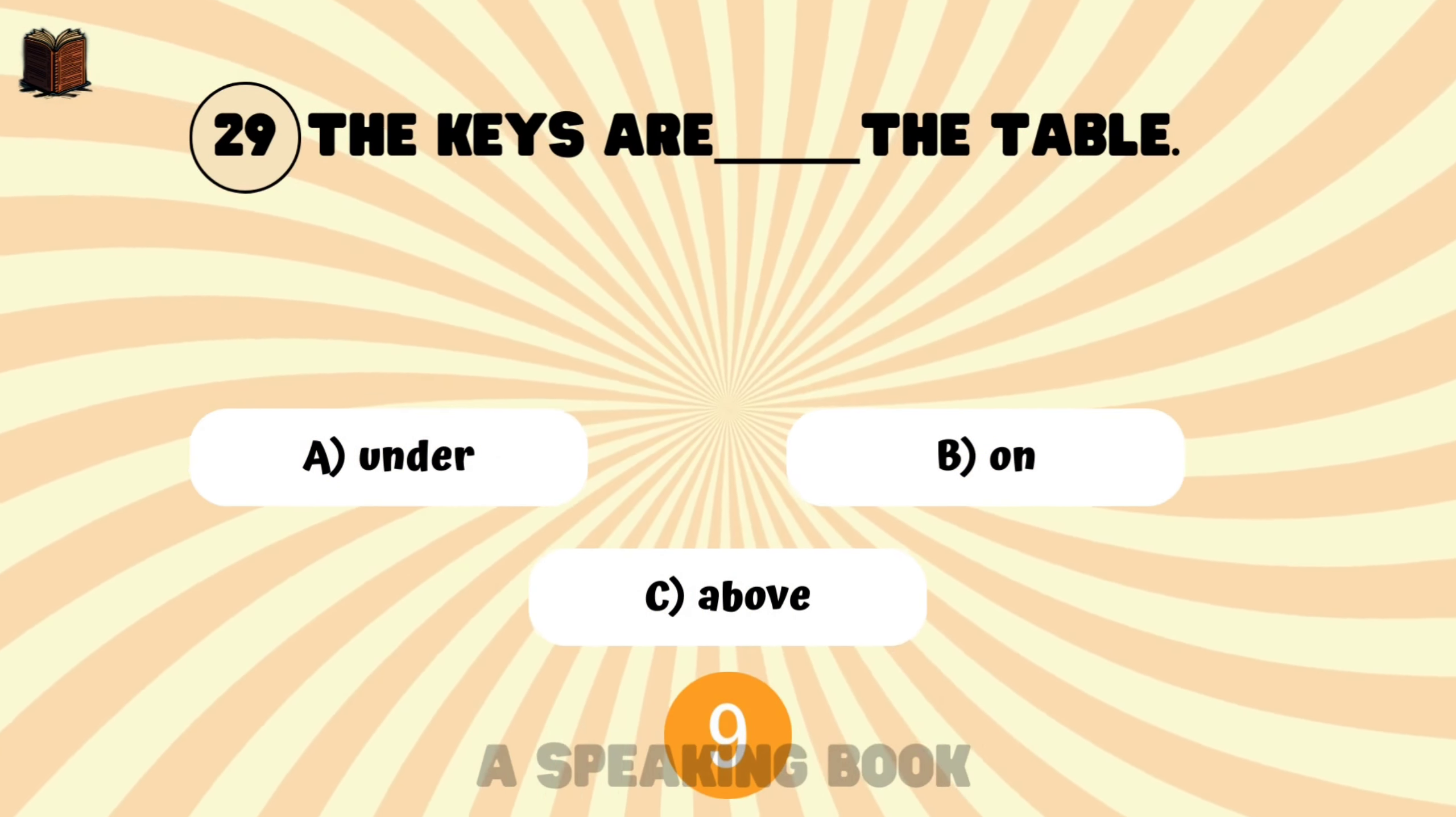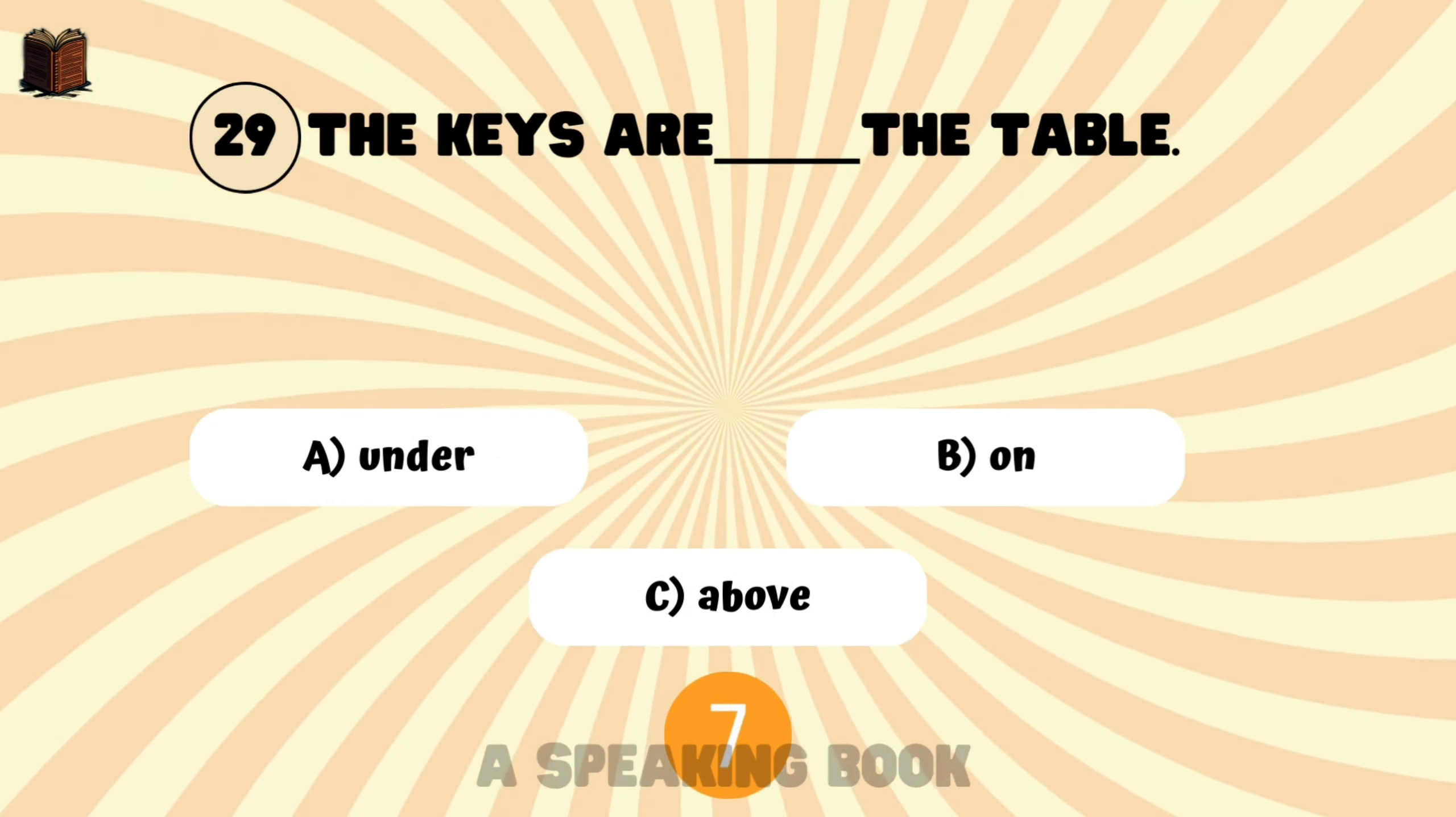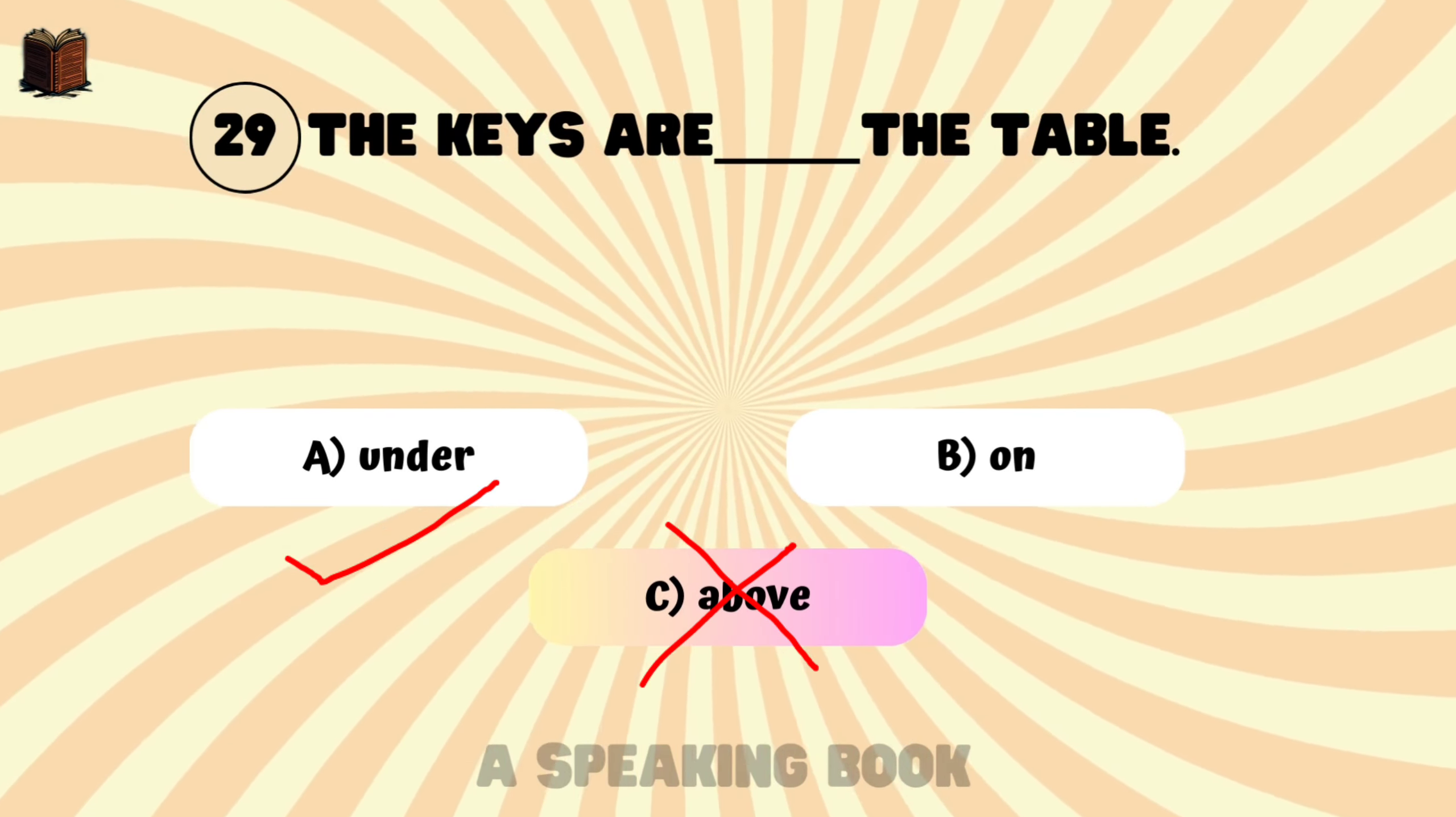The keys are blank the table. Options: A, under. B, on. C, above. The keys are under the table.